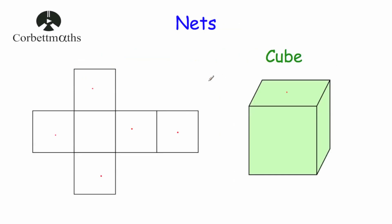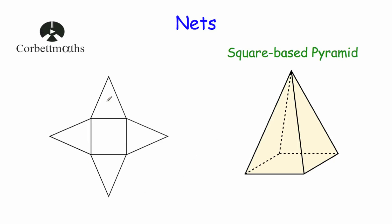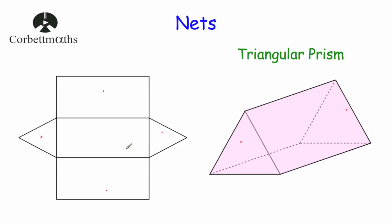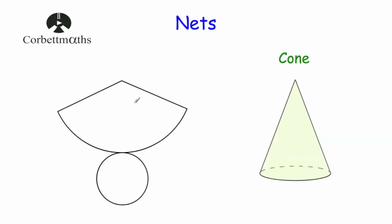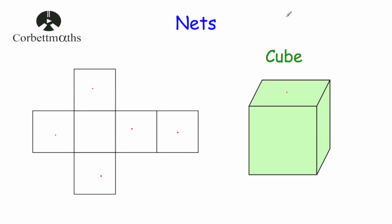So in this video we've looked at what a net is — a collection of 2D shapes that fold together to make the faces of a three-dimensional shape. We've looked at common nets: the cube has six squares; the cuboid has six rectangles possibly including some squares; the square-base pyramid has a square base with four triangles; the triangular prism has a rectangular base, two triangles, and two rectangles; the cone has a circle plus a sector; and the cylinder has a rectangle plus two circles for top and bottom. I really hope you found this video useful — please like it, subscribe to the YouTube channel, and thanks so much!